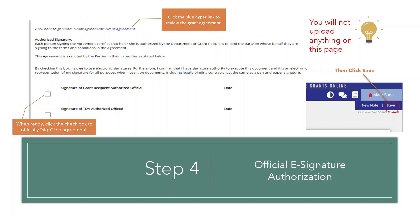You are now on the official e-signature authorization page. At the top of the page is where you click the blue hyperlink to review the grant agreement. When you are ready, click the checkbox to officially sign the agreement, then click Save. You will not be able to upload anything on this page.